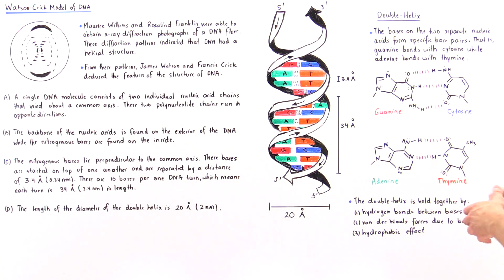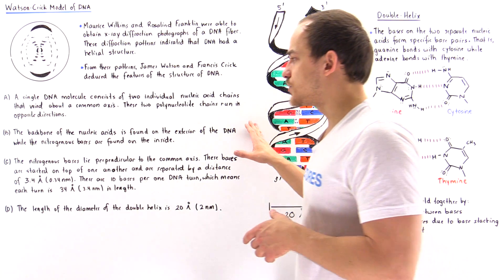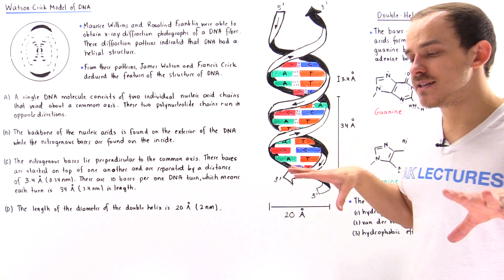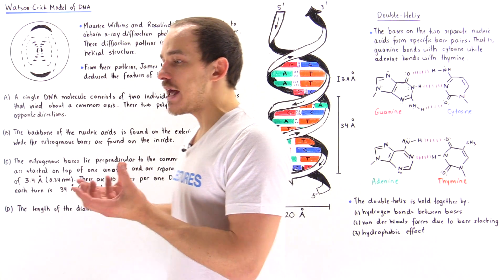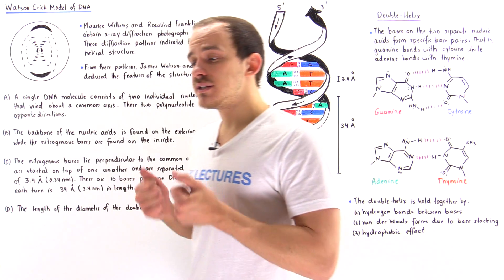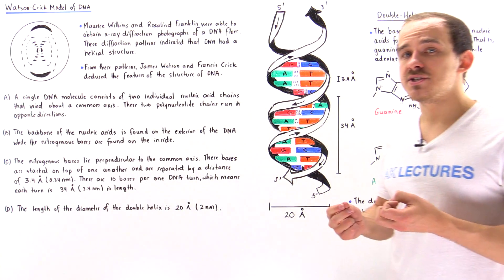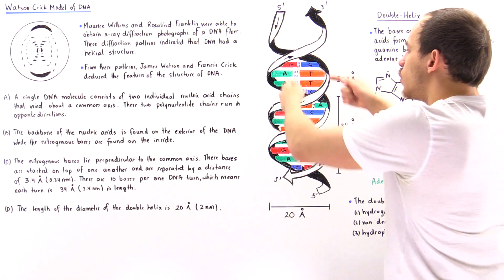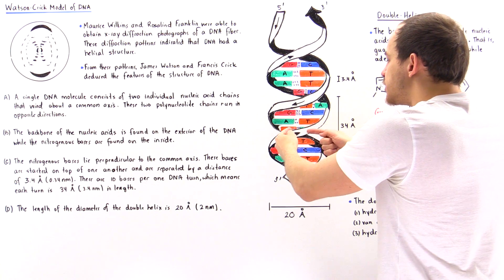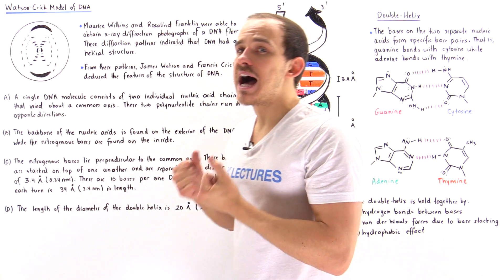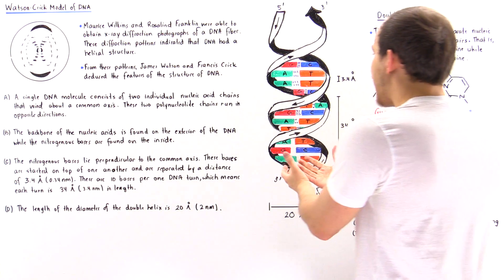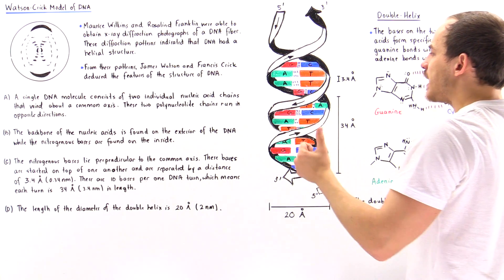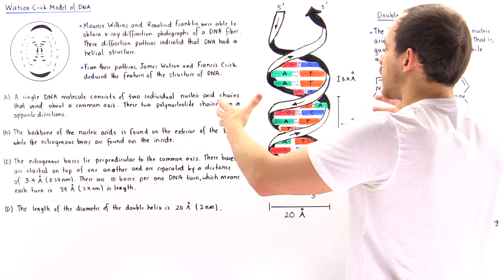If the backbone is found on the exterior, then the interior — the inside of that double helix — essentially contains the nitrogenous bases. On the inside portion of our molecule, we have these nitrogenous bases, which are relatively non-polar. While on the outside, we have the backbone that contains the sugar and phosphate groups.